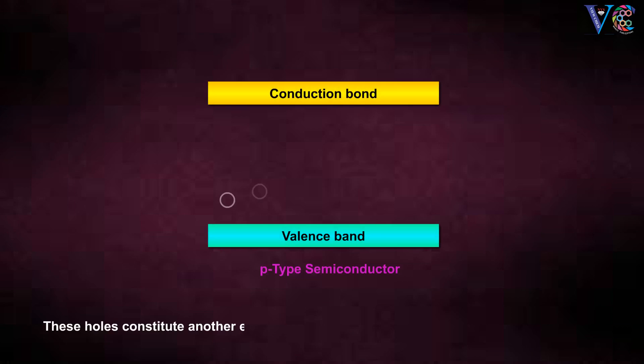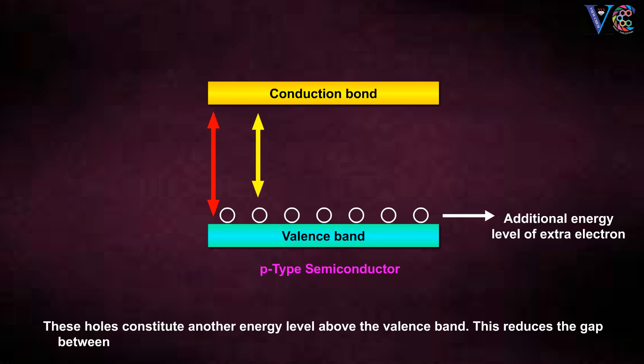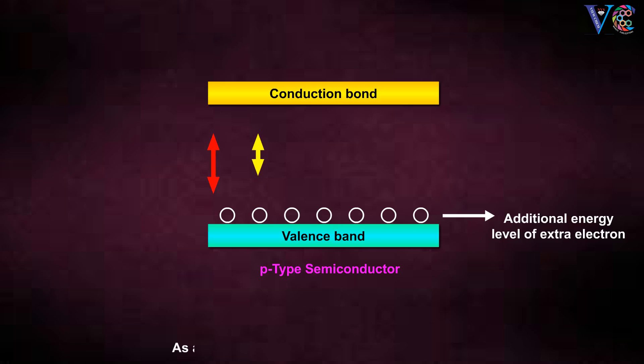These holes constitute another energy level above the valence band. This reduces the gap between the valence band and conduction band. That is, forbidden gap will be decreased. As a result, conduction becomes relatively easier.